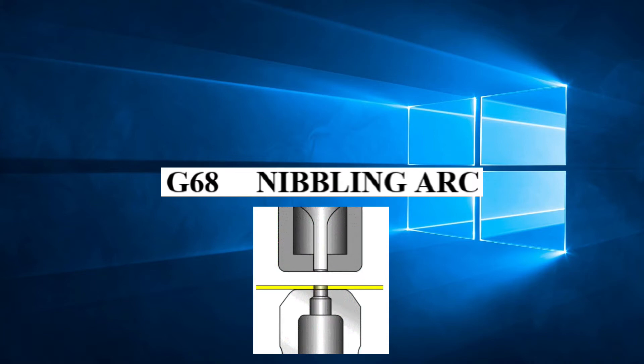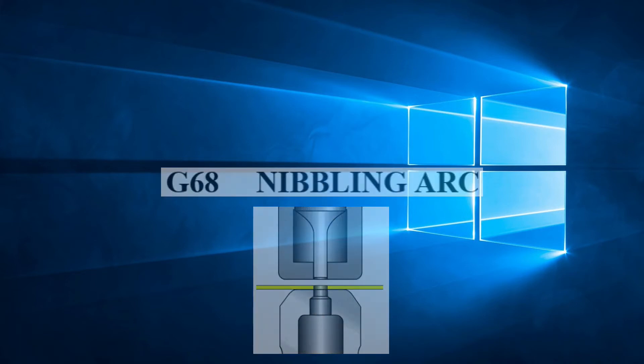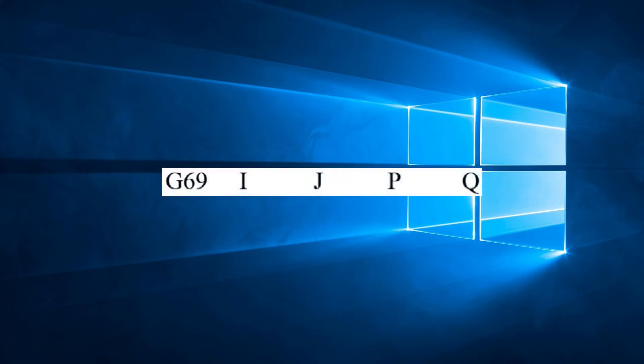Basically, the nibbling mode was created to speed up the punching process in older types of machines, which used a clutch and brake system to activate the RAM. This in turn imposed some limitations on when we can use this mode. G69 Nibbling Line is another code that will function in this nibbling mode.